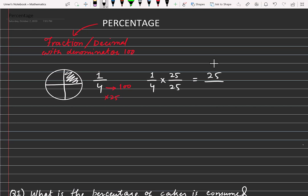Now we need to solve this further. 1 times 25 will give us 25, and upon 4 times 25 which is 100. Now I will tell you one more thing - this hundred in the denominator, I want to highlight this.